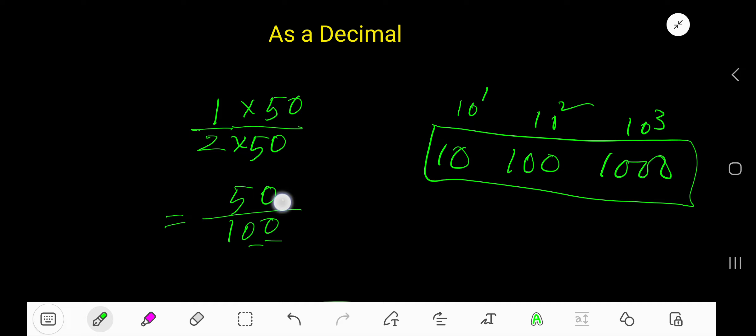So decimal point will move from right to left, that is here, so point 5, 0.5, 0.5 means 0.5. So half in decimal form is 0.5.